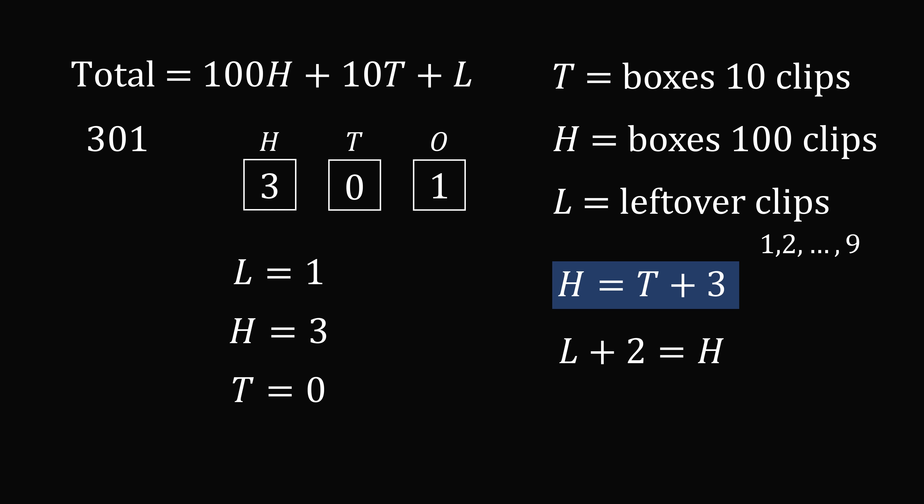So one possible answer is 301 paper clips, corresponding to one leftover paper clip, three boxes of 100 clips, and zero boxes of 10 clips. Some people may say that 'some boxes' excludes having zero — but I see nothing in the problem that excludes zero. So 301 is an answer. But if you don't want to accept this, let's figure out all the other possible answers.